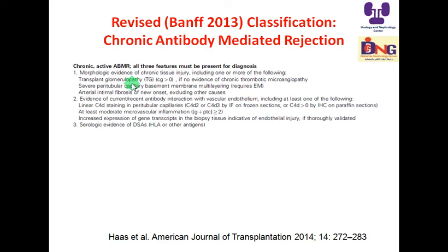Evidence of current or recent antibody interaction with vascular endothelium requires at least one of: linear C4D staining in peritubular capillaries (C4D2 or 3 by immunofluorescence, or above zero by immunohistochemistry on paraffin section); at least moderate microvascular inflammation with G plus PTC score ≥2; or increased expression of gene transcripts indicative of endothelial injury. The third criterion is serological evidence of donor-specific antibodies. Both acute and chronic AMR share the antibody interaction and DSA criteria — differentiation is by morphology.